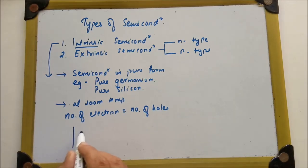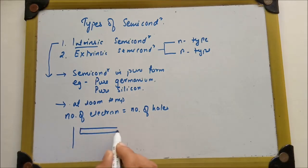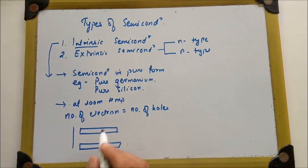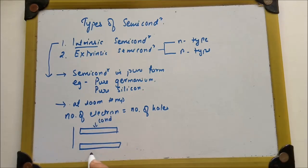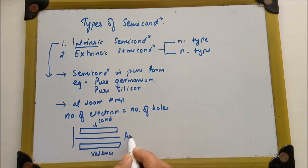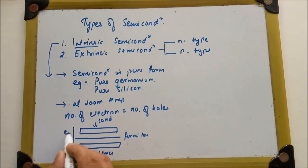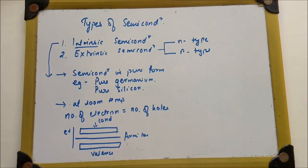The energy band diagram of an intrinsic semiconductor is as shown in the figure. This is the conduction band and this is the valence band. The Fermi level lies between the conduction band and valence band. This is the energy band diagram of the intrinsic semiconductor.